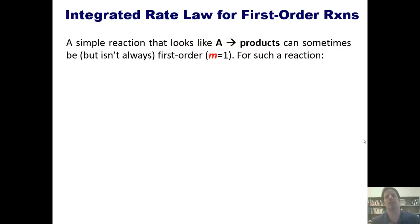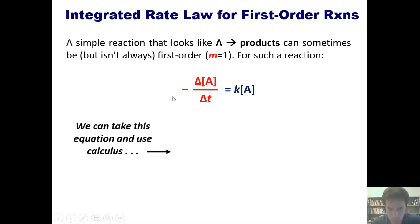I'm first of all going to teach you how to use an integrated rate law for first order reactions. A simple reaction that looks like A going to products can sometimes be, but isn't always, first order. That is where M, the little exponent in the general rate law equation, is equal to 1. For such a reaction, negative change in concentration of A over delta T is equal to K times the concentration of A. In other words, this component, which comes from the relative reaction rate equation, and this component, which comes from the general rate law equation, happen to equal each other. So we can take this equation, this whole thingy up here, and use calculus to transform it into this new equation.